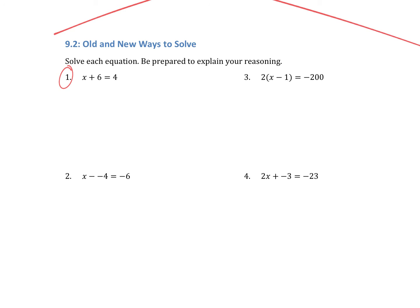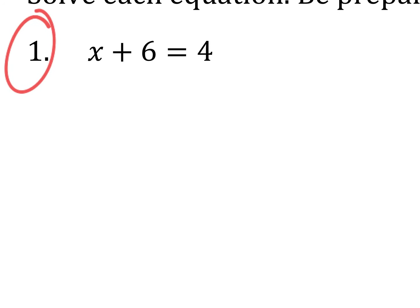Let's take a look at number one. If you wanted to draw a line down through your equal sign, you can. So if we picture our hanger, on the left side we would have a shape with the X in it and a shape with the 6 in it, and on the right side we would have a shape with the 4 in it. In order to figure out what X is, I need to remove the 6, and I do that by subtracting it. But whatever I do to one side, I have to do to the other.